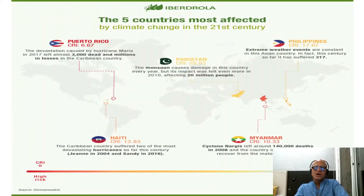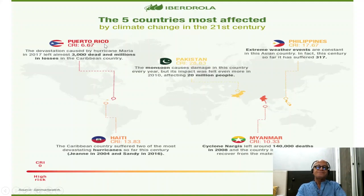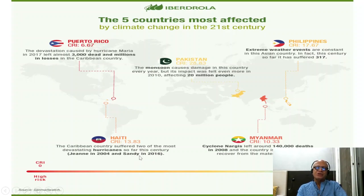The top 10 most climate-vulnerable countries include Japan, Germany, and many poorer nations. Puerto Rico has a climate risk index of 6.67 — Hurricane Maria in 2017 devastated the place. Haiti has an index of 13.83, hammered by Hurricane Jeanne in 2004 and Sandy in 2016, which took an unexpected westward turn crashing into New York and causing massive damage instead of going northeast.